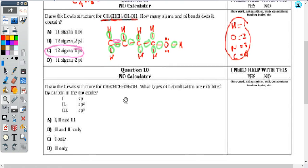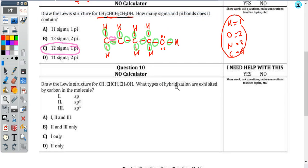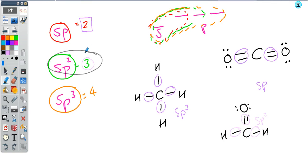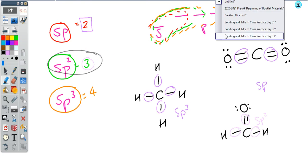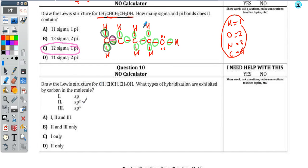Question ten — draw the Lewis structure. Done, we did it already. What type of hybridization is exhibited by carbon in the molecule? Looking at the first carbon: three regions of electron density — sp2 hybridized. Same for the second carbon: one, two, three regions — sp2. Then the third carbon: four regions — sp3. And the fourth carbon: four regions — sp3. So we've got sp2 hybridization for some carbons and sp3 hybridization for others.